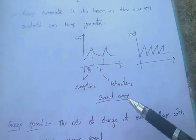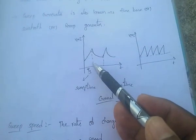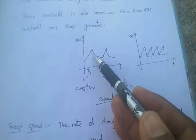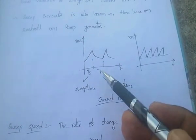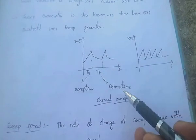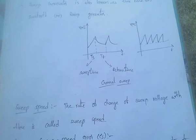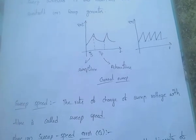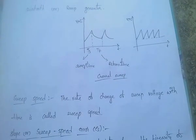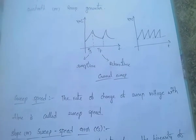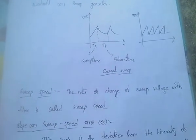In a general sweep waveform, the increasing time is called sweep time and the decreasing time is called return time. The rate of change of sweep voltage with time is called sweep speed.